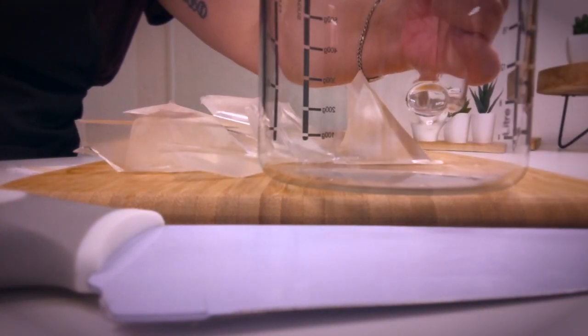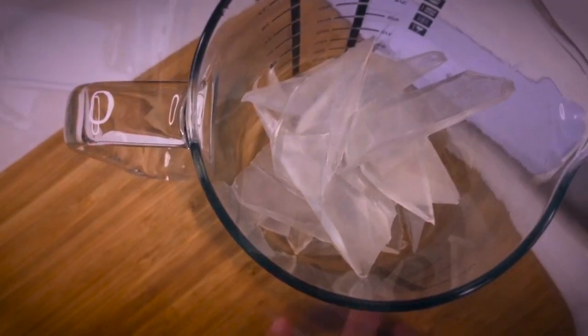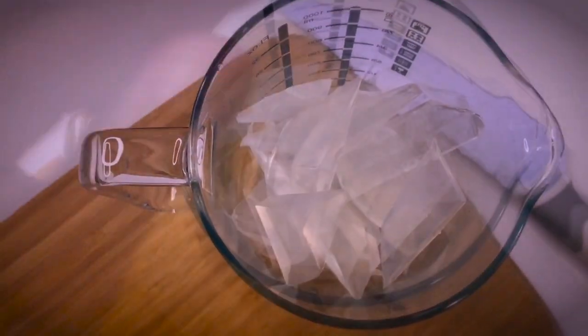I like to use a double boiler to melt down my melt and pour soap, but you can also use a microwave. If you do so, use short increments so you don't overheat the soap.